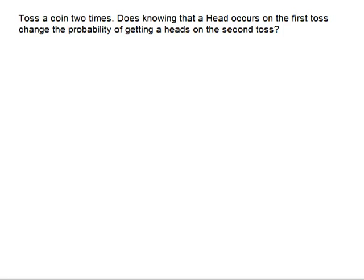Alright, so we're going to toss a coin two times, and we're going to assume it's a fair coin for this. Does knowing that a head occurs on the first toss change the probability of getting a heads on the second toss?